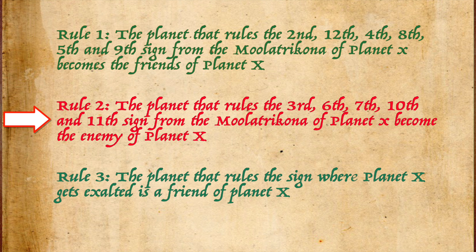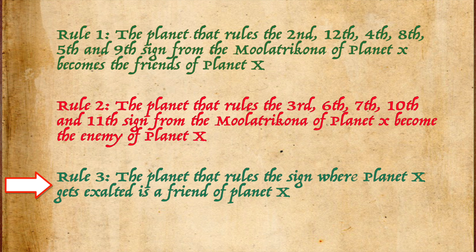The rest are its enemies. Obviously the 1st house is excluded. So the 3rd, the 6th, the 7th, the 10th and the 11th lords become their enemies. Now there is an exception — the third rule: the lord of its exaltation sign is also its friend. Please remember this, it might come in handy many times. How does a planet become a neutral? That's because by one rule it becomes a friend and by another rule it becomes its enemy. In that case, you can say that it is neutral.